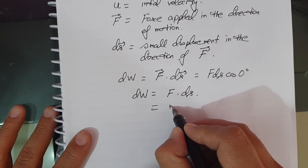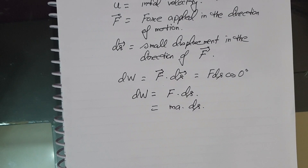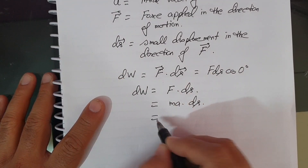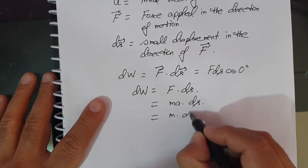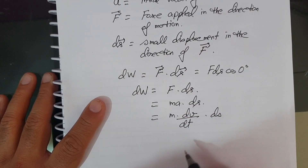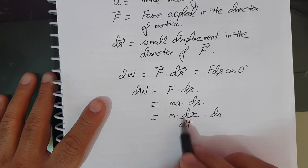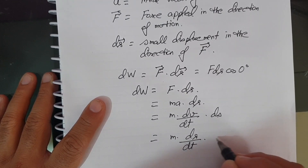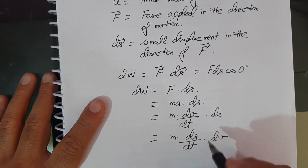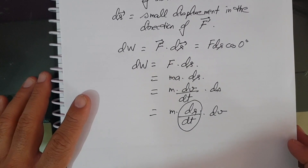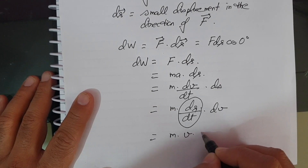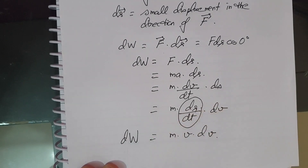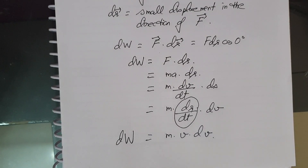Now since F = ma, we have dW = m·a·ds. Substituting a = dv/dt, this becomes dW = m·(dv/dt)·ds. Rearranging, this is m·(ds/dt)·dv. Since ds/dt = v, we get dW = m·v·dv.